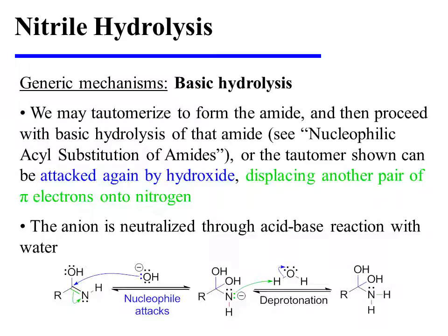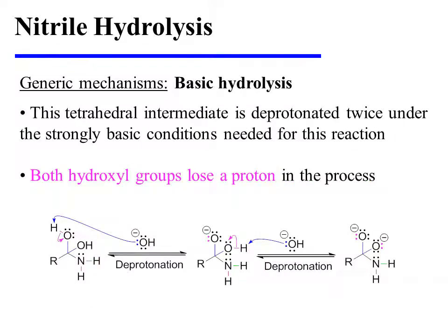The other choice is for the tautomer shown to be attacked again by hydroxide, displacing another pair of pi-electrons onto nitrogen. The anion that is formed is then neutralized through an acid-base reaction with water. Under the strongly basic conditions needed for this reaction, the tetrahedral intermediate is then deprotonated not just once, but twice.